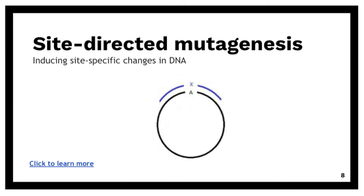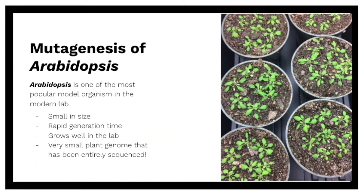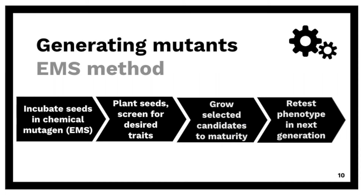Now that we have CRISPR-Cas9 technology, we can do some really specific edits of the genome of organisms in vivo. Arabidopsis is one of the most common model organisms used in the lab. It's generally pretty small, it has really fast generation times, it grows well in the lab environment, and the entire genome of Arabidopsis thaliana has been sequenced.